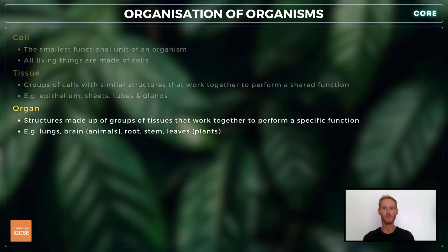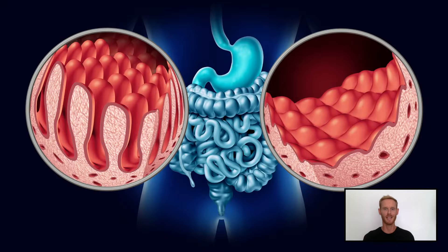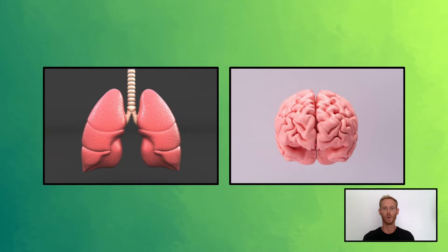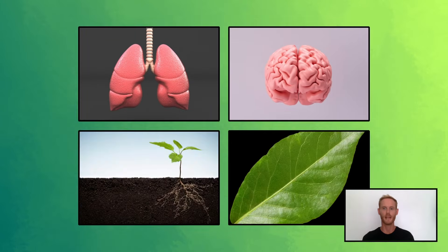Organs are structures made up of groups of tissues that work together to perform a specific function. For example, the small intestine is a digestive organ that contains tissues made from gland cells, muscle cells, nerve cells and epithelial cells. Further examples of organs include the lungs and brain in animals, and the root, stem and leaves in plants.